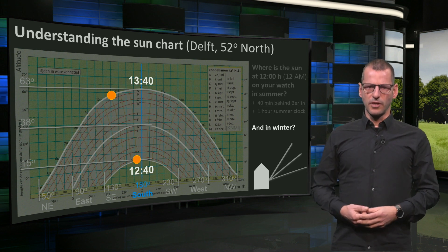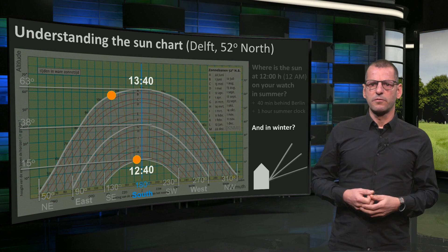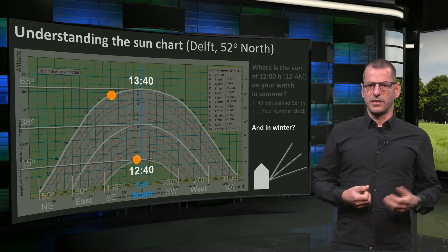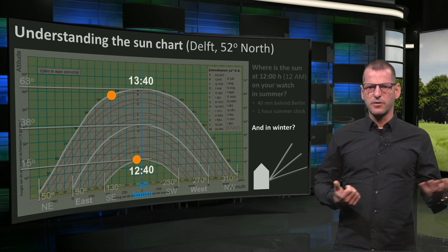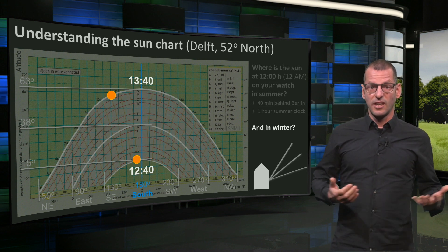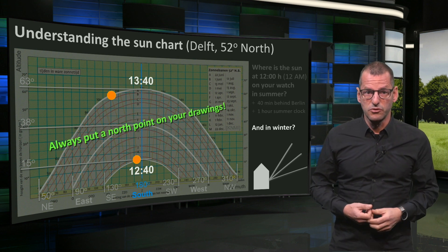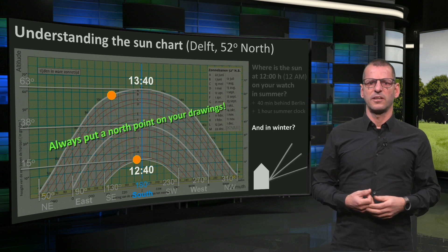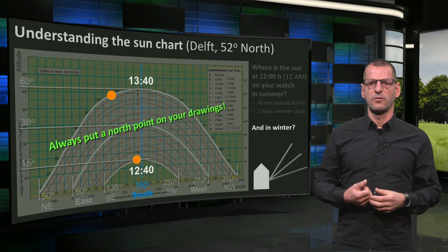Now why is this important to know? Well, if you know where the sun is, at which moment of the day, you will be able to design the right spatial configuration, glazing and shading for specific functions in a building. It starts with the sun, so always put a north arrow on your drawings. You cannot design an energy efficient building if you don't know how the sun turns around or over it.